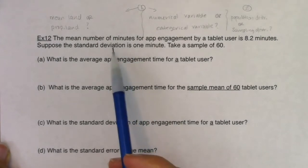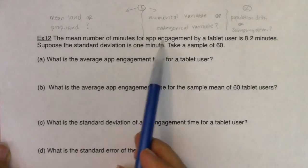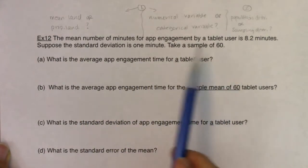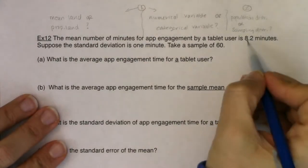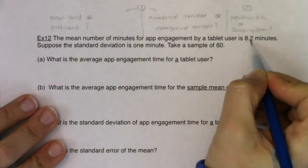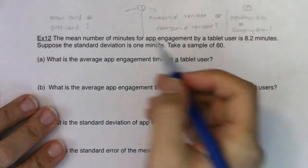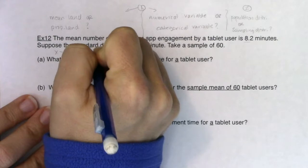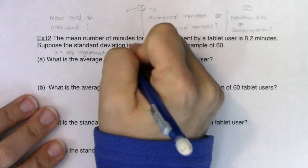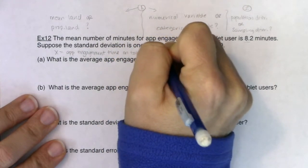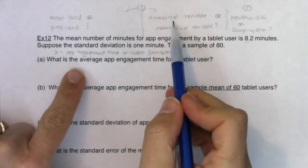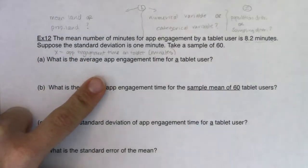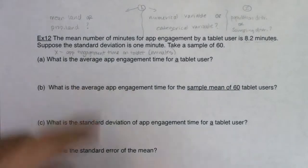Let's look at some clues as we read this. 'The mean number of minutes for app engagement by a tablet user is about 8.2 minutes.' You see the number 8.2 — that is a numerical variable. I can also see units: app engagement time in minutes. As soon as you see units, you know you're in mean land, because the units for proportion land are percentages.